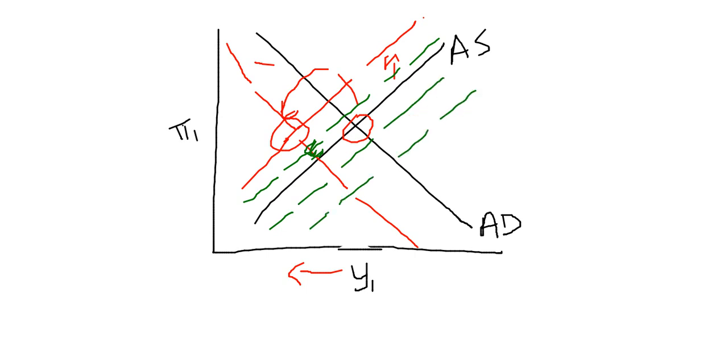until finally we get back to our initial level of potential GDP. So that's the self-correcting mechanism that's embodied in the aggregate demand, aggregate supply framework.